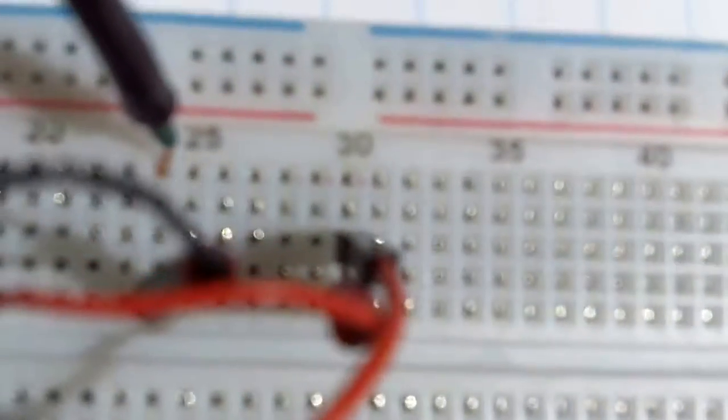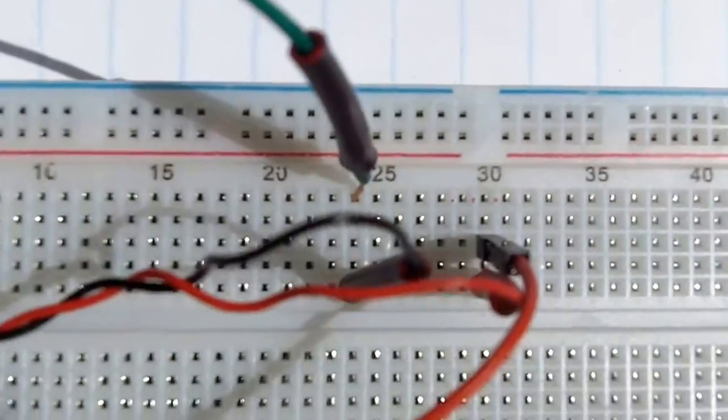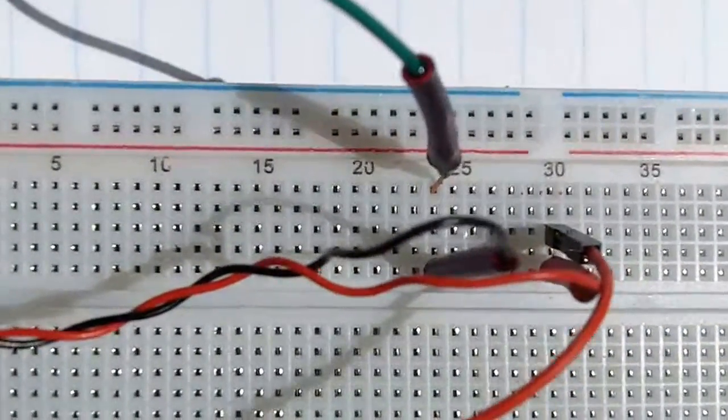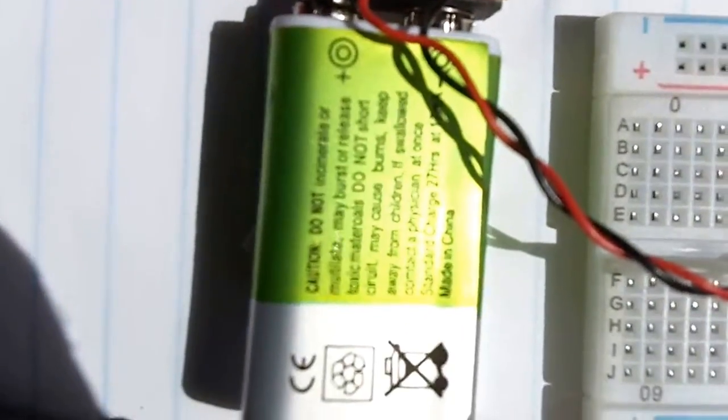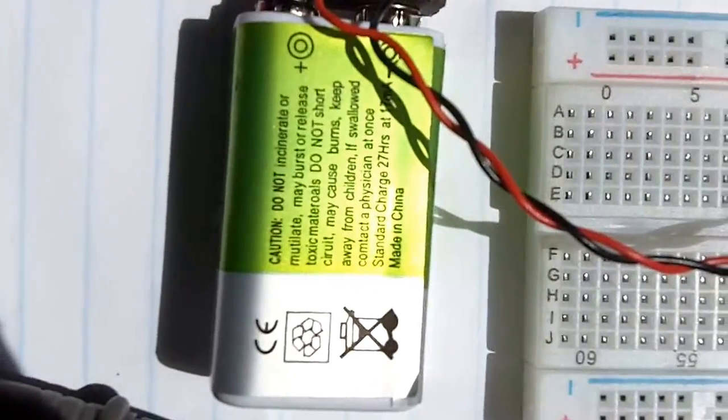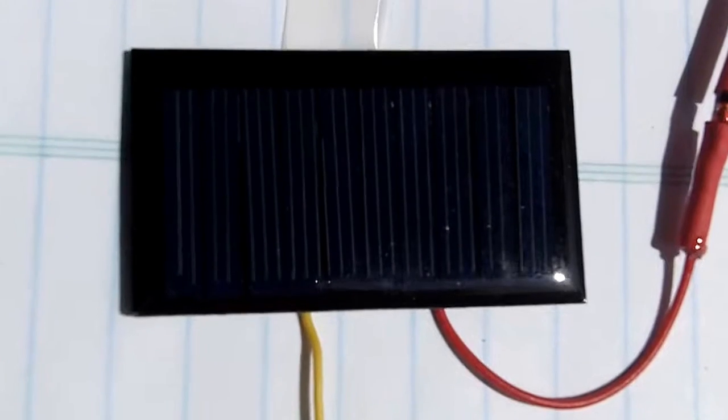I've got just a simple little breadboard circuit. This is a rechargeable battery that I bought on eBay. These are the two solar panels.